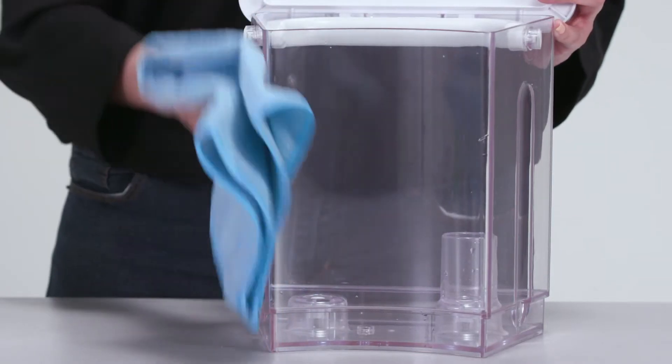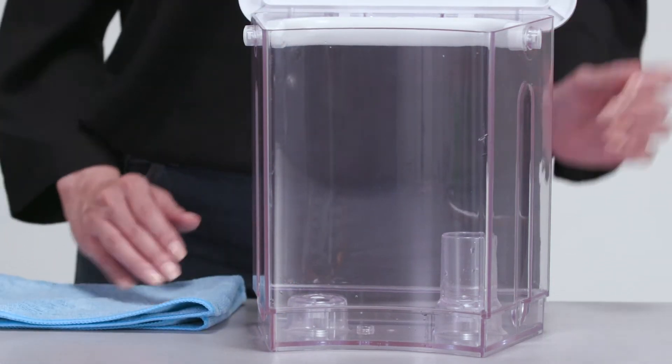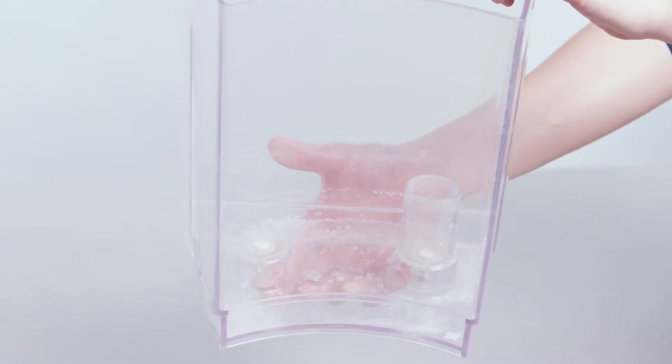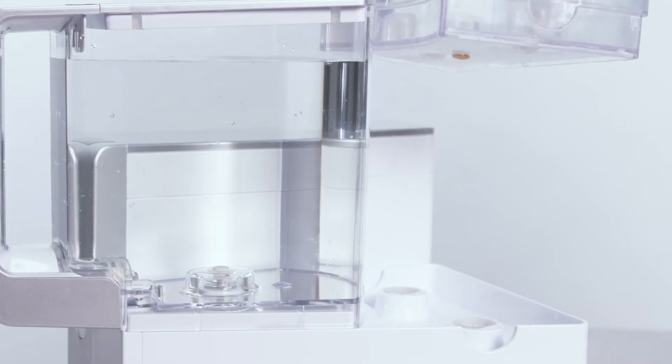Before starting, make sure that the tap tank is clean and free of any hard water deposits and your unit is on. Sometimes, mineral buildup can prevent the valves from properly closing when you remove the tap water tank from the base, causing the tank to leak.